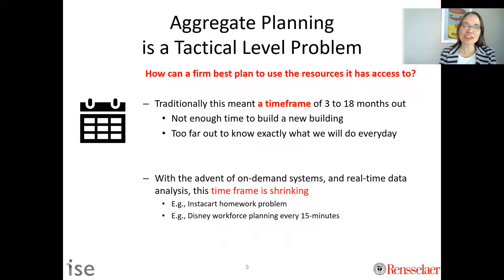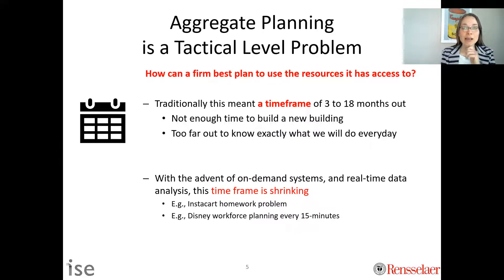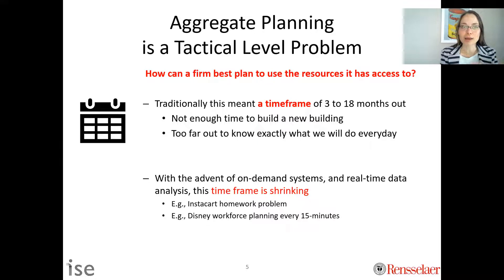With the advent of on-demand systems, on-demand warehousing, 3D printing, and real-time data analysis, we now have updated information in much shorter amounts of time, so this time frame is shrinking. One of the homework problems is about Instacart, and they do an aggregate planning problem at a much, much shorter time frame — not three to 18 months out.